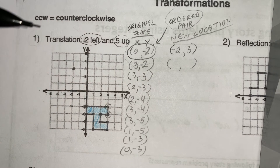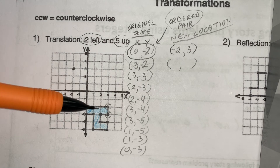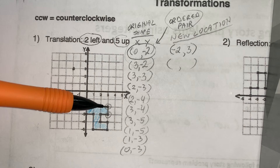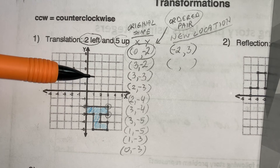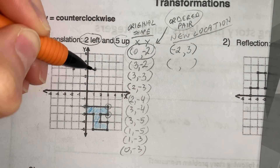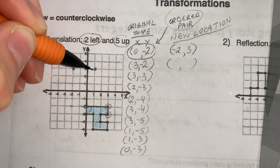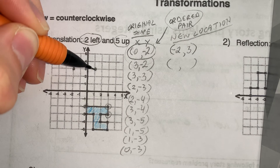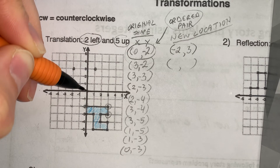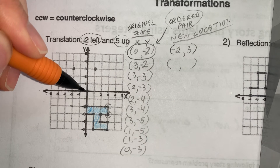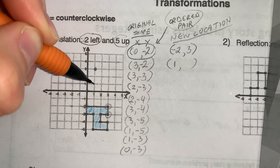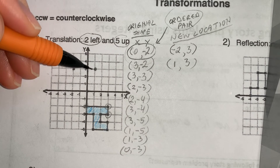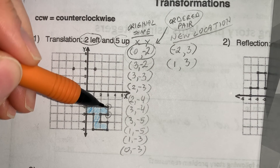So let's do a couple more points to show how that works. Second point: from here we're going to go two to the left and five up. So the x-coordinate — counting from zero — is one because we went to the right. And the y-coordinate? One, two, three. So the new location for the second ordered pair is (1, 3).